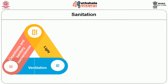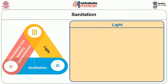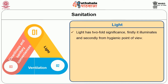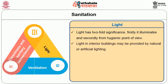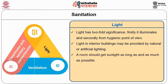The next principle is sanitation. Sanitation consists of providing ample light, ventilation, facilities for cleaning, and sanitary conveniences. Light has twofold significance: firstly it illuminates, and secondly from a hygienic point of view. Light in interior buildings may be provided by natural or artificial lighting. A room should get sunlight as long and as much as possible. Vertical windows are therefore better than horizontal ones.